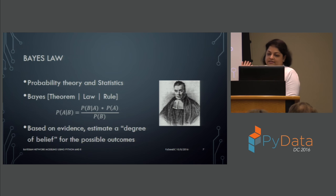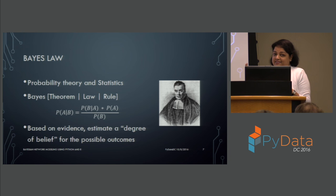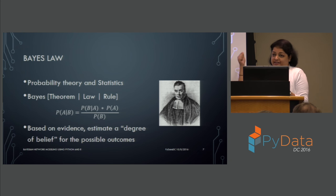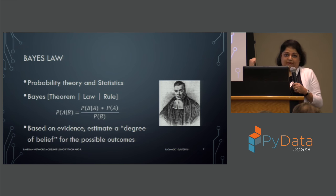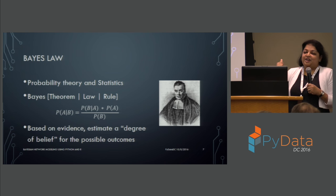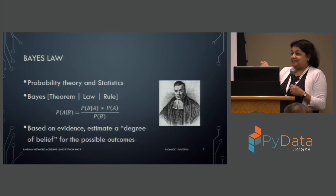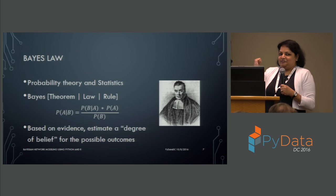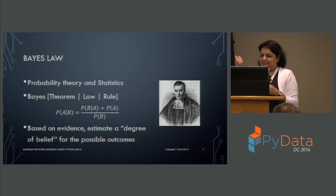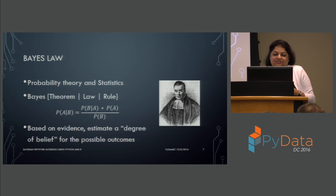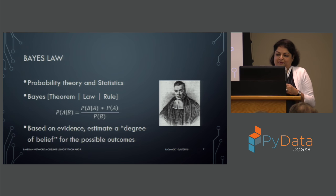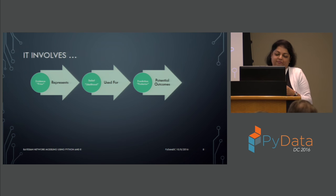This is Thomas Bayes, who came up with Bayes' law. It's very interesting how he came up with it — he was not credited for it when he was alive, and it became more popular posthumously. If you're interested in the history of mathematics, I would definitely encourage you to learn more about him and how Bayes' law came about.